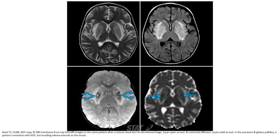Axial T2, ADC map, and SWI images in the same patient after a seizure show foci of microhemorrhage and restricted diffusion in the pons, basal ganglia, and globus pallidus — a pattern consistent with hemolytic uremic syndrome involving the insular cortex as well.